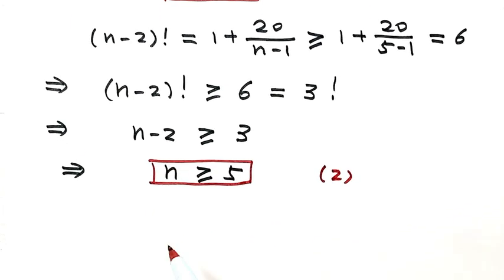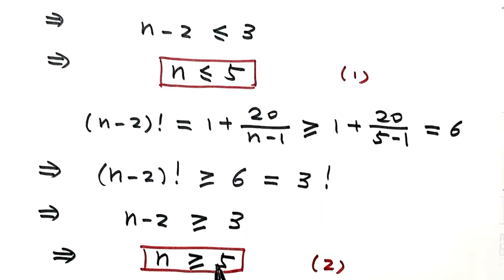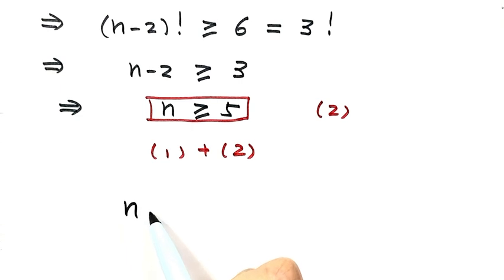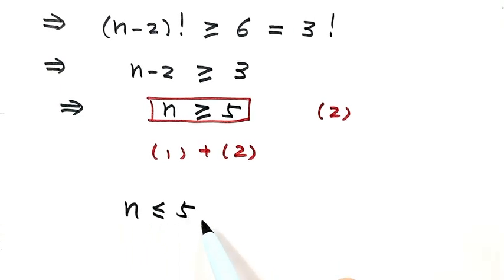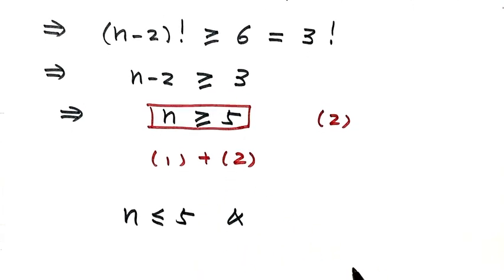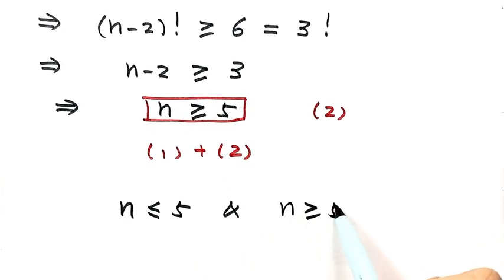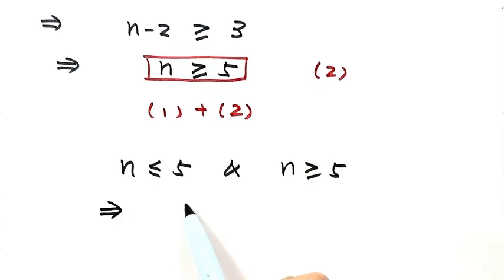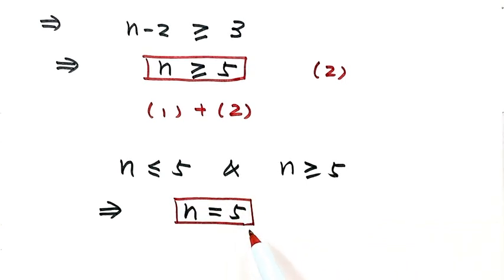Now let's combine Result 1 with Result 2. From Result 1, n is less than or equal to 5, and from Result 2, n is greater than or equal to 5. So n can only be 5. By checking — plugging 5 into the original equation — 5 is indeed a solution. So that is the answer for this question. Thanks for watching.